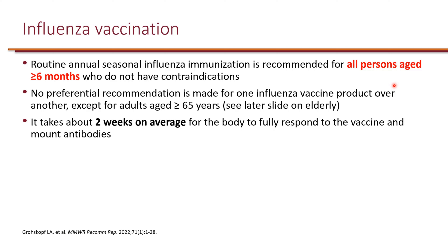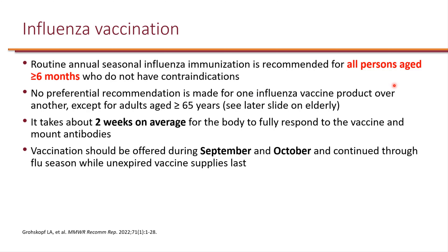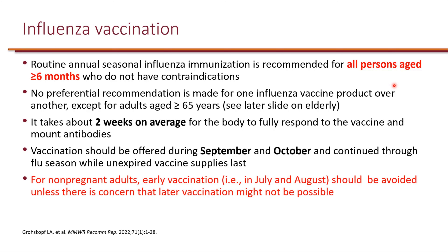In general, it takes about two weeks on average for the body to fully respond to the vaccines and mount antibodies. Vaccination should be offered during September and October and continue through flu season while unexpired vaccine supplies last. For non-pregnant adults, early vaccination — for example, when the vaccine becomes available in July and August — should be avoided unless there is concern that later vaccination might not be possible. If somebody is in their third trimester in July, for example, they may go ahead and receive the vaccine.